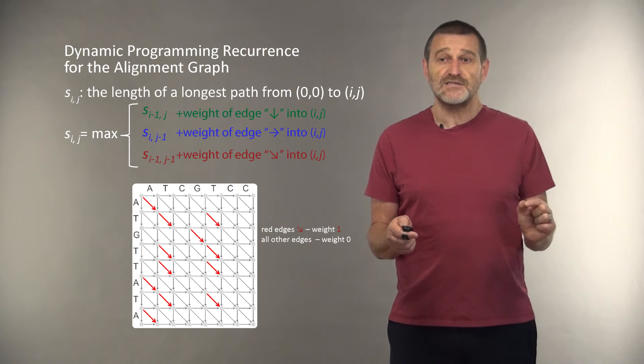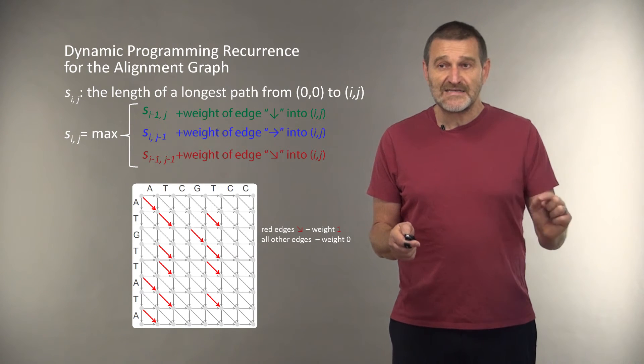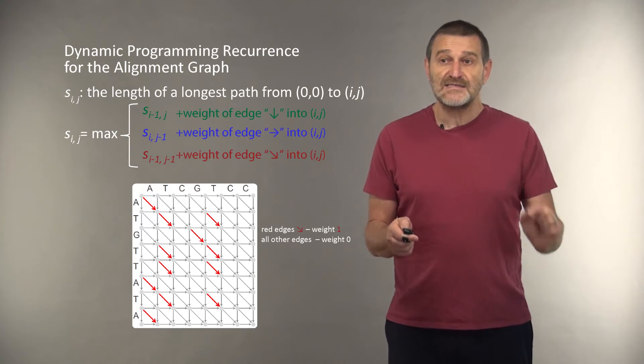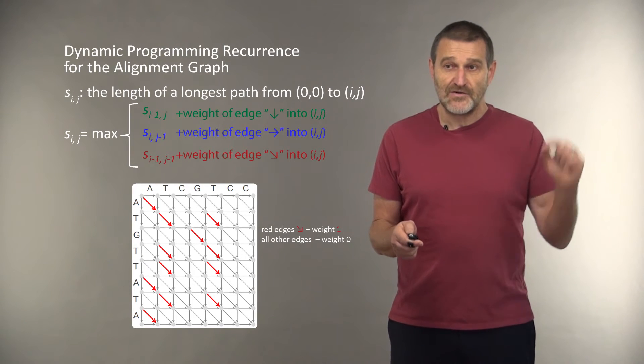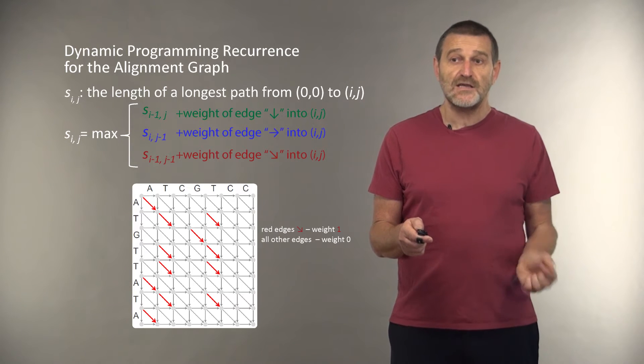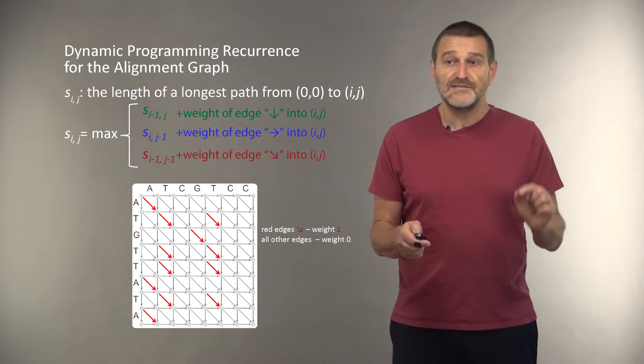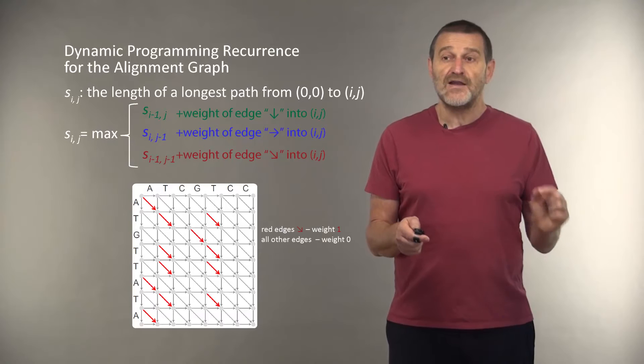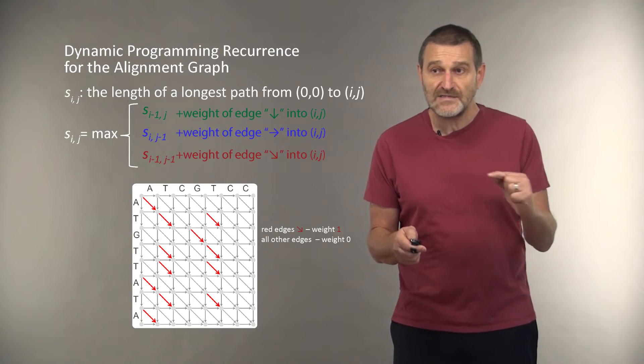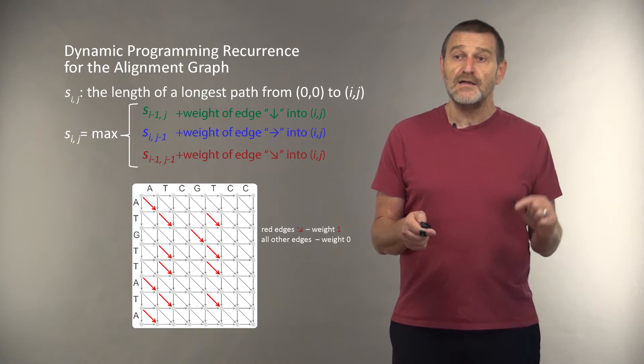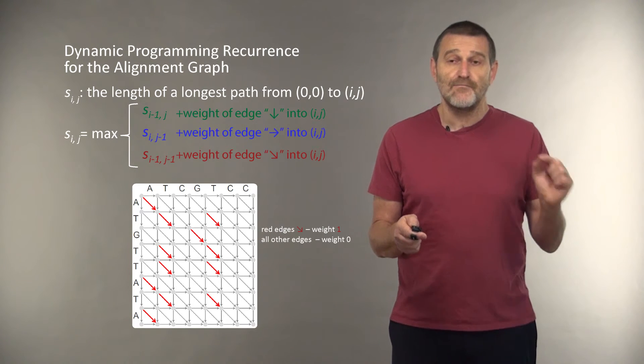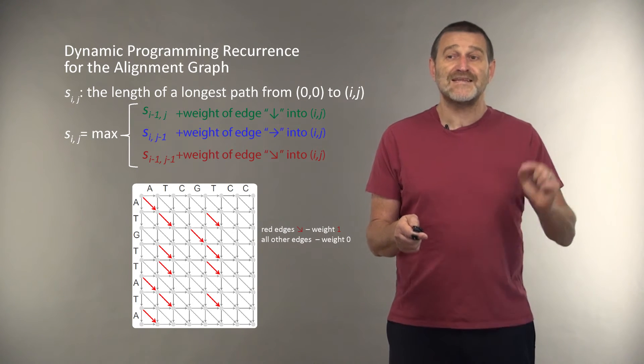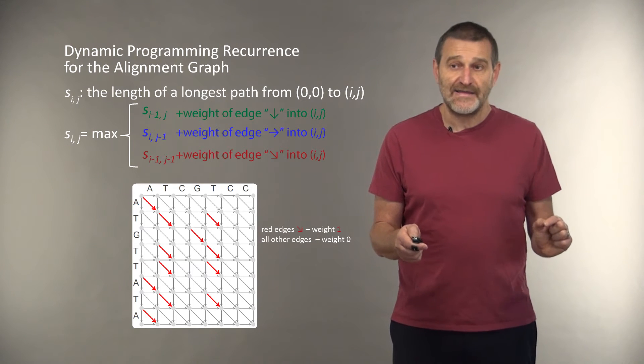We can either compute S_ij as S_(i-1,j) plus weight of the vertical edge into node (i,j), or S_(i,j-1) plus weight of the horizontal edge into (i,j), or S_(i-1,j-1) plus weight of the diagonal edge into (i,j).